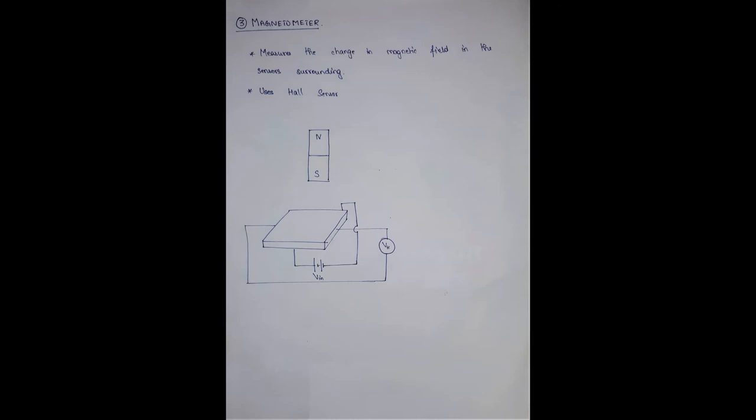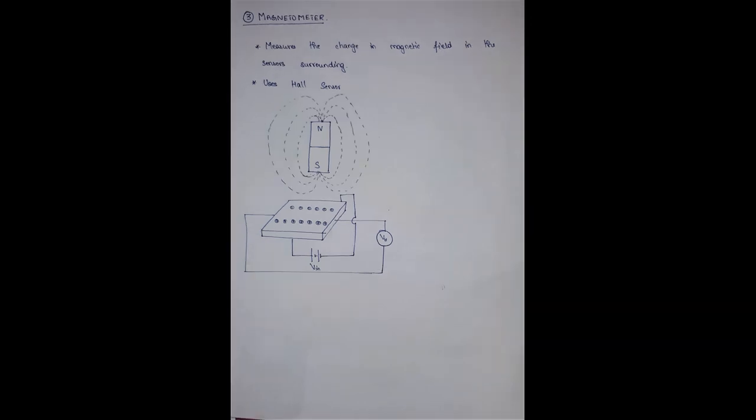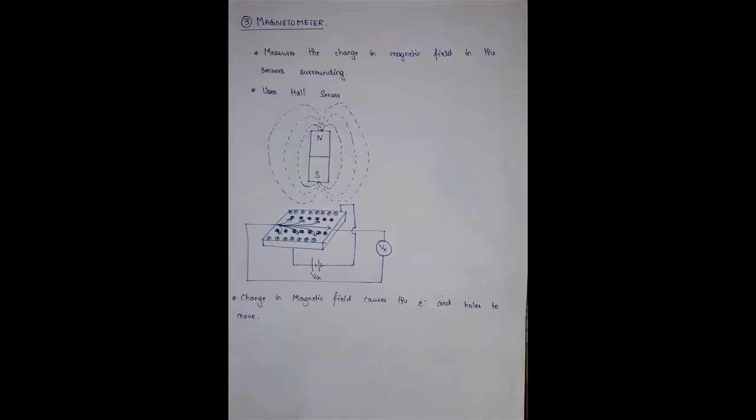Usually, in the Hall sensor, all the electrons and holes are separated in one side like in the diagram. When there is a change in magnetic field, the electrons and the holes will be pushed to one side, that is far extreme sides. When they are pushed to far extreme sides or when they are contracted, that is when they come to their original position, there will be a change in voltage, change in output voltage. That output voltage is called as the Hall voltage.